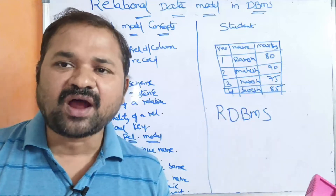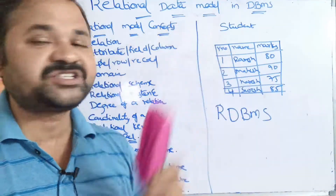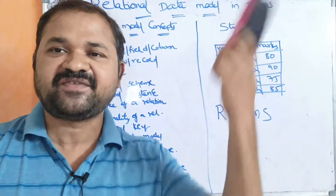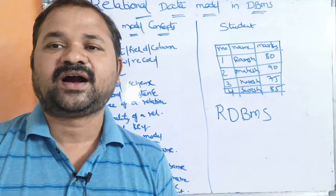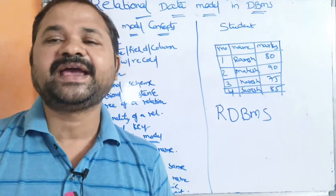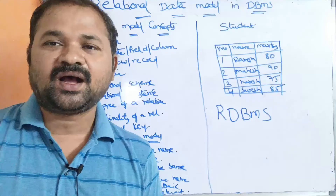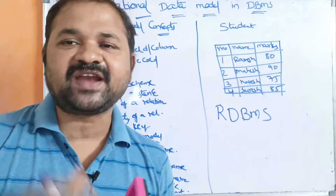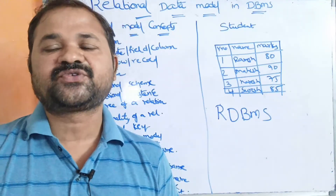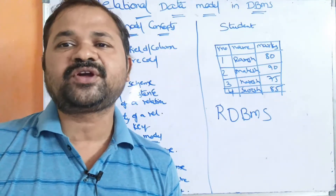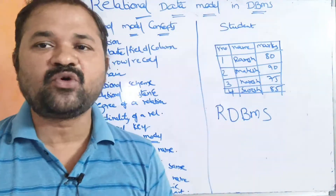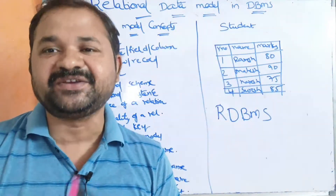Before RDBMS, before the relational data model, we had several other models like the network data model and hierarchical data model, but there were several disadvantages with those models. So in order to overcome those drawbacks, the relational data model was introduced.